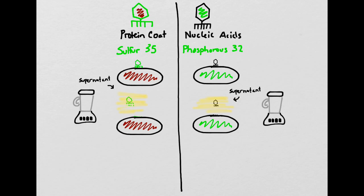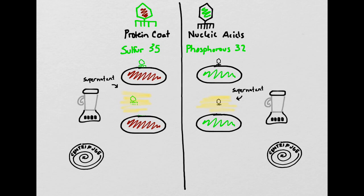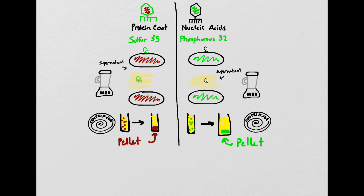So now each blender has a liquid portion which contains the dissolved protein coats and a solid portion that contains everything else. However, at the moment, they are mixed together in the blender, and so we need to separate them. To separate the liquids from the solids, the scientists then put the mixture into a centrifuge, which spins very fast and separates components based on density. After spinning the components in the centrifuge, we now had a liquid portion containing the protein coats and a solid portion containing everything else. We call the solid portion the pellet. Hershey and Chase then tested both the pellet and the supernatant in each case to determine which of them was radioactive.